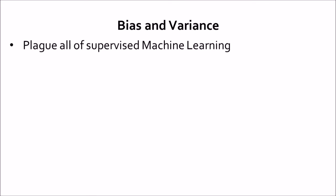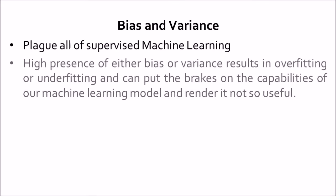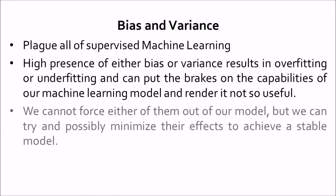Now, bias and variance plague all of supervised machine learning. High presence of either bias or variance can result in overfitting and underfitting, putting the brakes on the capabilities of a machine learning model. We cannot force either bias or variance out completely, but we can minimize their effects and achieve a stable model.